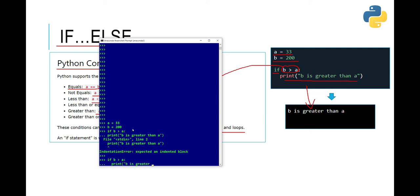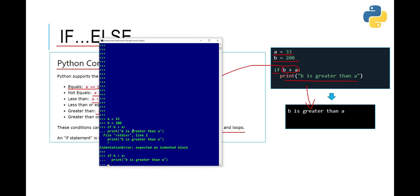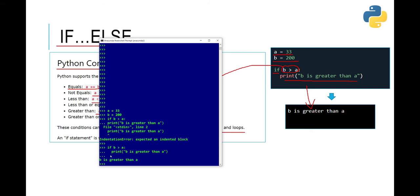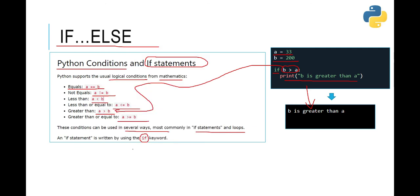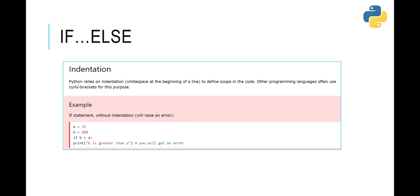If b is greater than a, then you give for example two spaces — now it will be okay. 'b is greater than a' — and yes, you can see the output: 'b is greater than a'. Now we know how to write an if statement in Python and run it. We've also seen that if we don't give proper indentation while writing an if statement it will not work. Python relies on indentation — white space at the beginning of a line — to define scope in the code. This is a very important concept.